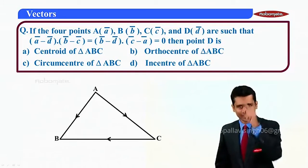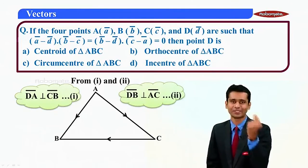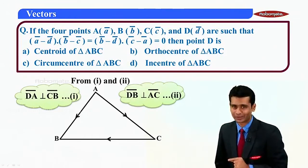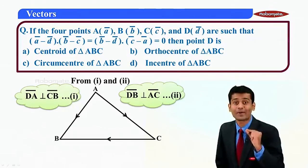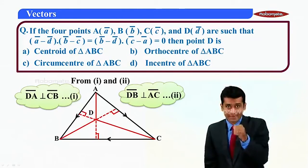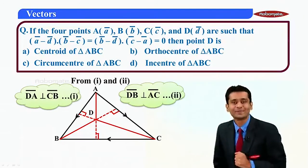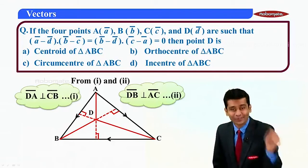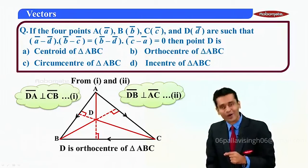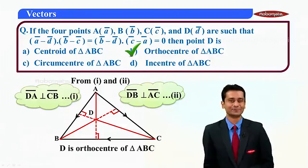Drawing triangle ABC and applying both equations: DA-bar is perpendicular to BC-bar, and DB-bar is perpendicular to AC-bar. Both are altitudes of the triangle. The intersection of altitudes is always the orthocenter. Therefore point D is the orthocenter of triangle ABC, and the answer is option B.